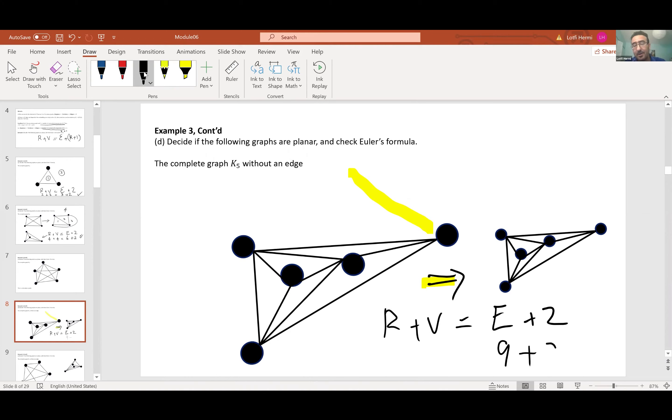I have 9 edges plus 2. That should be the same as the number of vertices, which is 5 because I'm dealing with almost K5. How many regions do I have? I'm expecting to have, well this is 11, so probably 6 regions. Here's one, the second, third, fourth, fifth, and six. One is outside. 6 plus 5, that's 11. So K5 without one edge is embedded in R2.